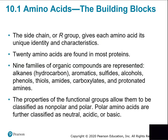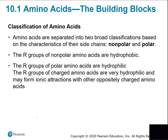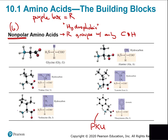The R group determines whether an amino acid is hydrophilic or hydrophobic. R groups that are non-polar or hydrophobic consist of nothing but carbons and hydrogens. R groups that are ionic or polar are hydrophilic — they have oxygens and nitrogens. You have R groups that are non-polar (hydrophobic) and R groups that are ionic or polar (hydrophilic).